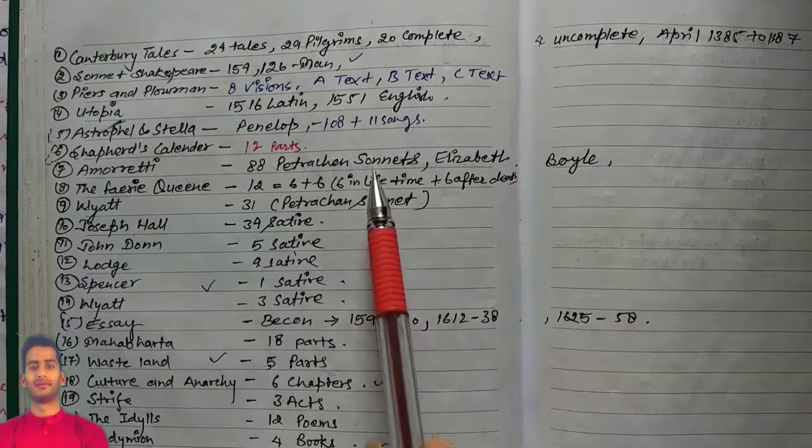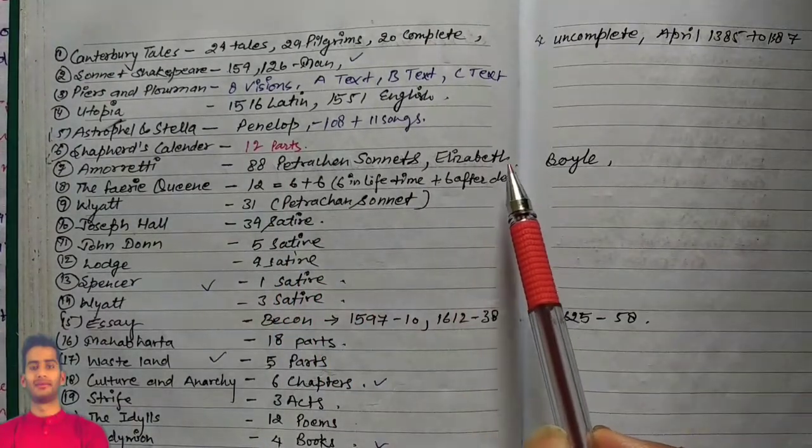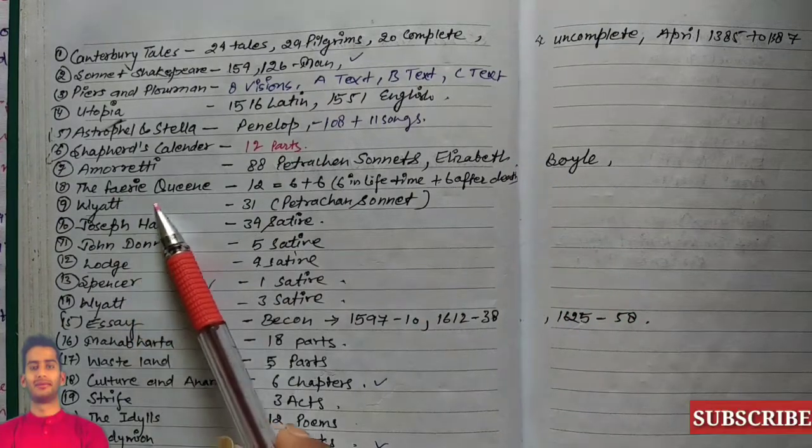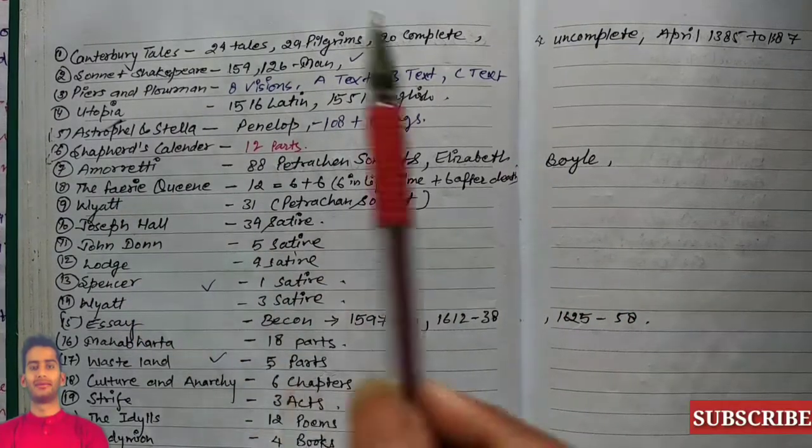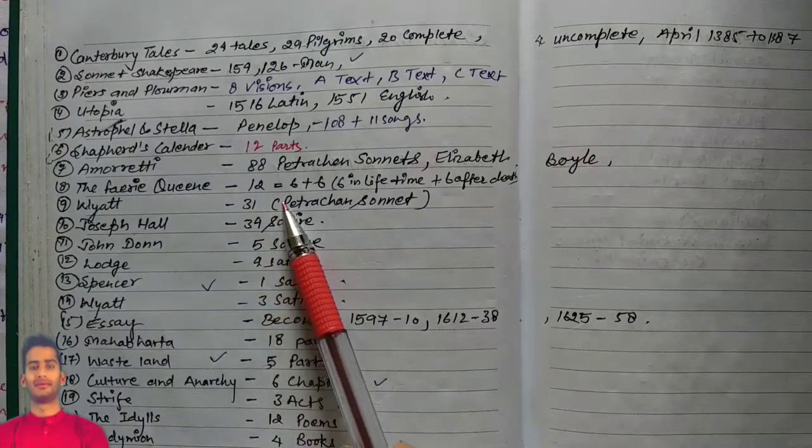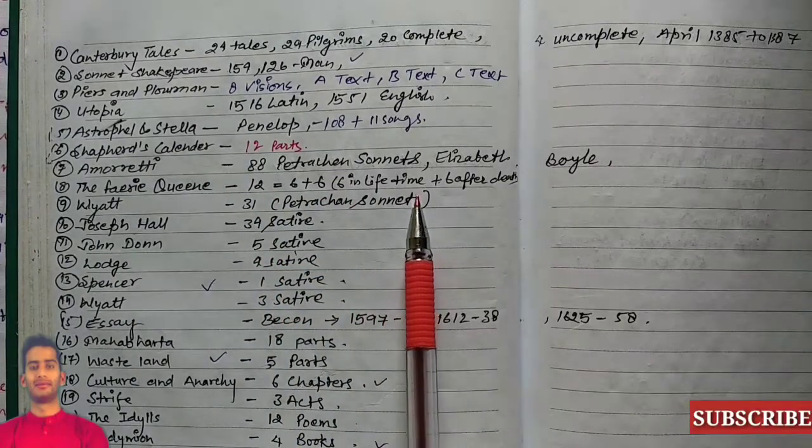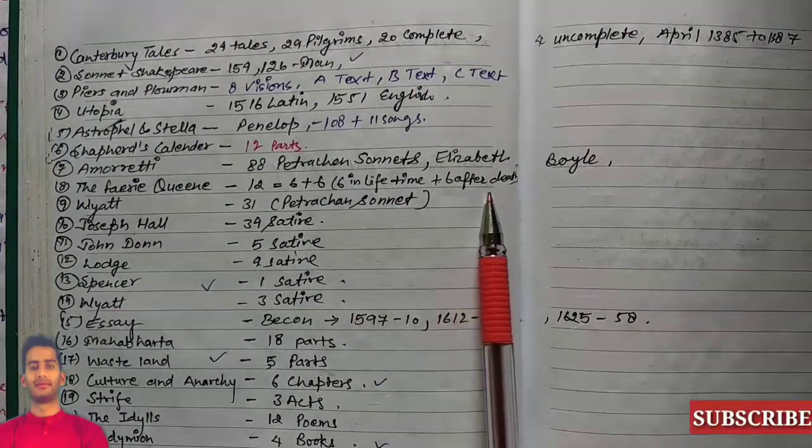Amoretti consists of 88 Petrarchan sonnets and these are written for Elizabeth Boyle. The Faerie Queene has 12 books: six were published in lifetime and six after death of the writer.